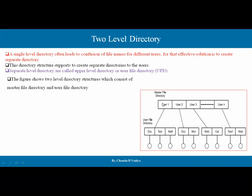In the diagram, there is a master file directory where user 1, user 2, user 3 and so on are listed. The user file directories are created inside the master directory. At the same level within each user file directory, files such as doc, test, and mail are present according to the user's convenience. This structure consists of a master level directory and user file directories.